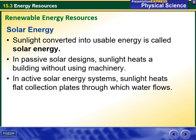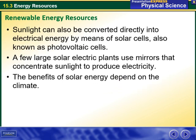Moving to solar energy. Sunlight converted into usable energy is called solar energy. In passive solar design, sunlight heats a building without using machinery. In active solar energy systems, sunlight heats flat collection plates through which water flows. Sunlight can also be converted directly into electrical energy by means of solar cells, also known as photovoltaic cells.